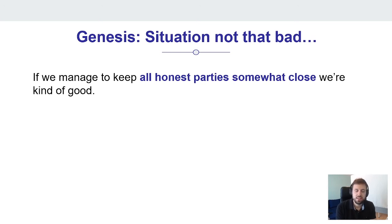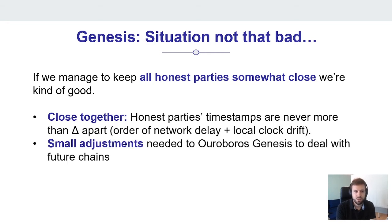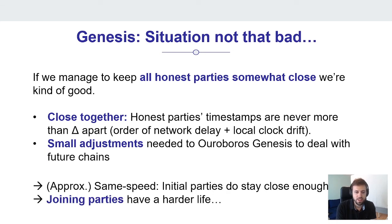Let's analyze Genesis placed in this environment. What we prove in this paper is that if we manage to keep all honest parties somewhat close together, we're essentially fine. This requires an extension of the analysis but doesn't require inventing an entirely new protocol for this aspect. Close together means parties are maybe delta apart from each other, depending on the order of network delay and clock drift. We have to make small adjustments to Ouroboros Genesis to deal with future chains — if we have a local view of time, there is no objective notion of future and past for parties. Thanks to the approximately same speed assumption, the initial parties do stay close enough. However, joining parties have a hard life and are exactly the source of the problem.